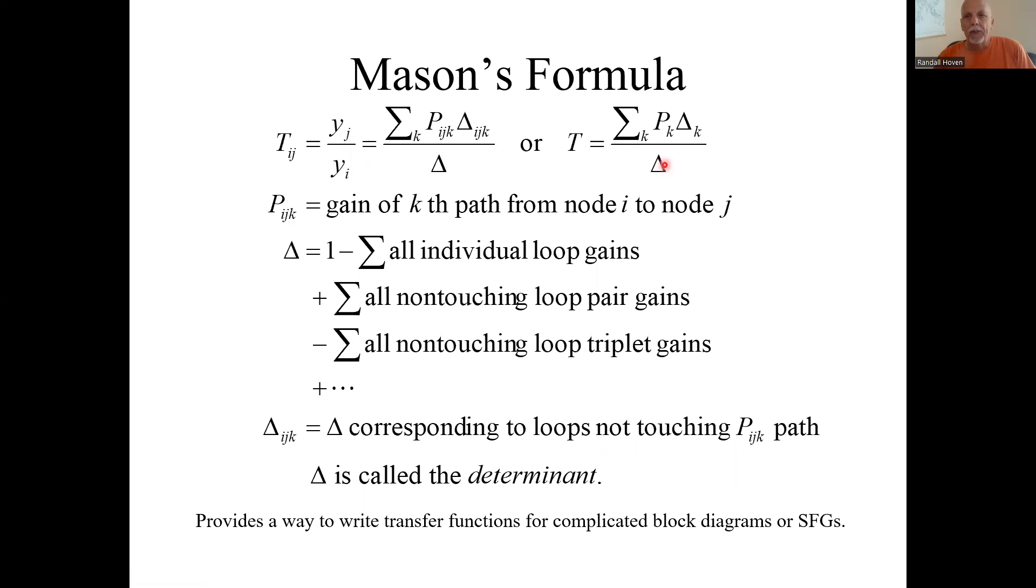Well, the denominator is this delta, we call it the determinant. And what it is, here's the formula for that delta, for the determinant. It's one minus the sum of all the individual loop gains, plus all the pairs of loops that don't touch each other.